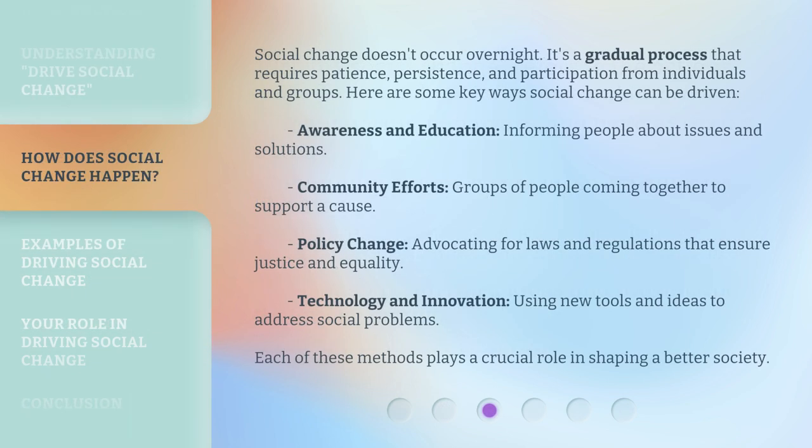Social change doesn't occur overnight. It's a gradual process that requires patience, persistence, and participation from individuals and groups. Here are some key ways social change can be driven: awareness and education — informing people about issues and solutions; community efforts — groups of people coming together to support a cause; policy change — advocating for laws and regulations that ensure justice and equality; and technology and innovation — using new tools and ideas to address social problems. Each of these methods plays a crucial role in shaping a better society.